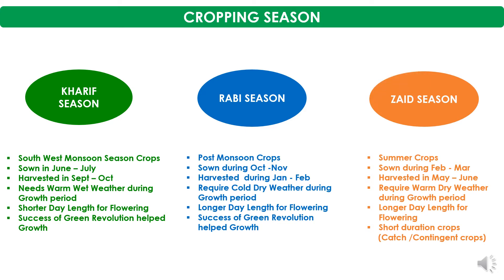First we will start with cropping season. As per seasonal classifications, crops are grouped under the seasons in which their major field duration falls. On a seasonal classification basis, the cropping season is classified into three groups: first is Kharif season, second is Rabi season, and third is Zaid season.